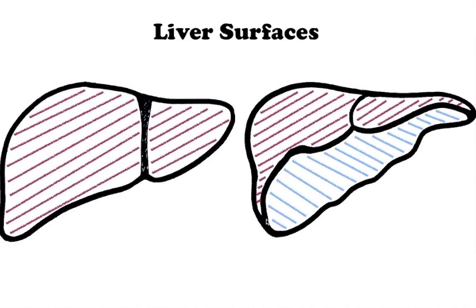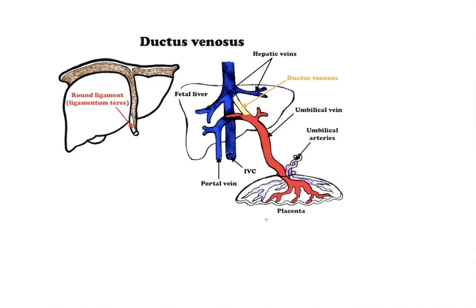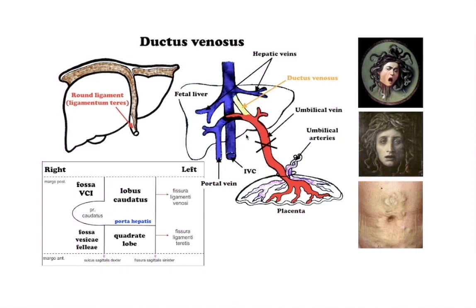Based on morphologic anatomy, the falciform ligament divides the liver into left and right lobes. Within the lower edge of the falciform ligament is the round ligament, a remnant of the obliterated umbilical vein and ductus venosus, that travels from the umbilicus into the umbilical fissure, where it is in continuity with the ligamentum venosum. The ligamentum venosum lies within a fissure on the inferior surface of the liver between the caudate lobe posteriorly and the left lobe anteriorly.